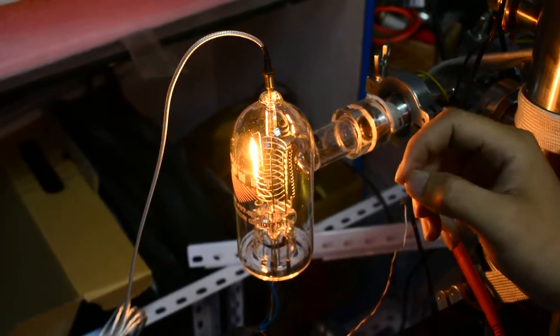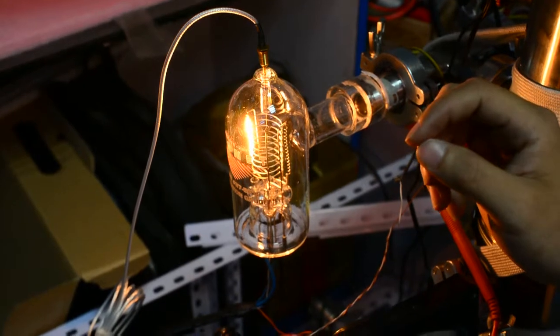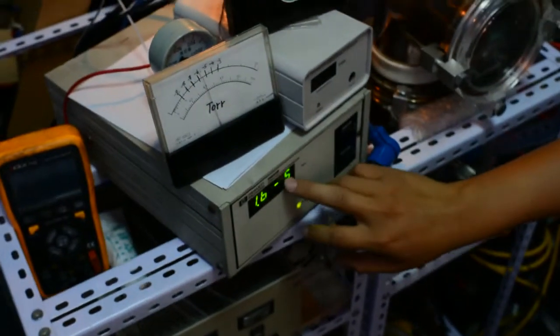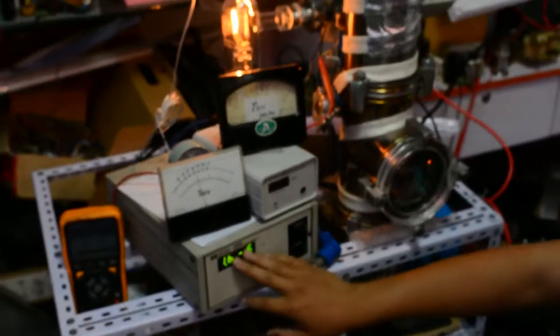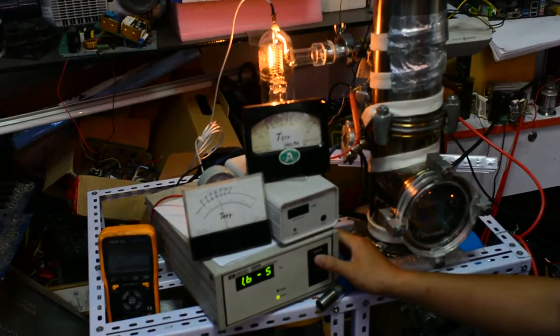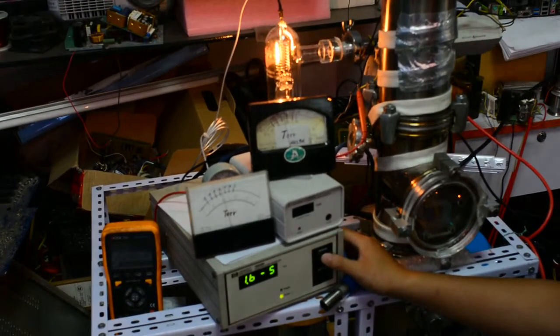It can cause a problem by the measurement readout. When it is dropping down to the 5 to the minus fifth torr, I can use the degas operation. I will show you how to do it.